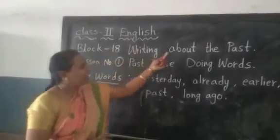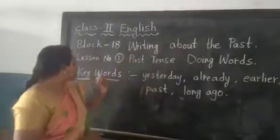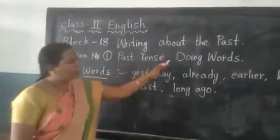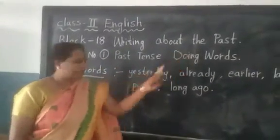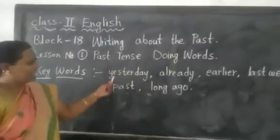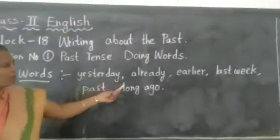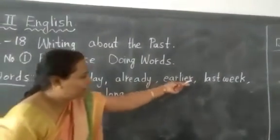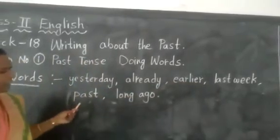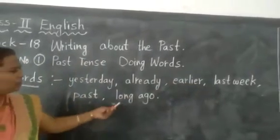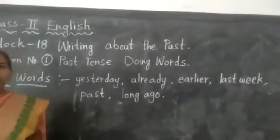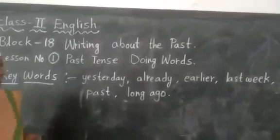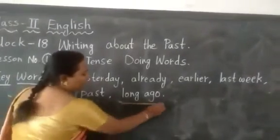Writing about the past. Lesson number 1 is past tense doing words. Keywords are: yesterday, already, earlier, last week, past, long ago. Yes children, in some stories we will get the word 'long ago.'